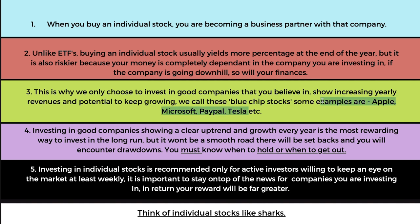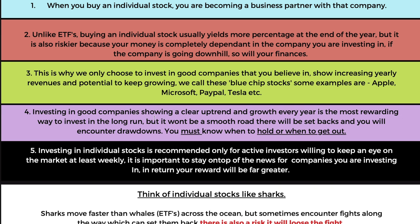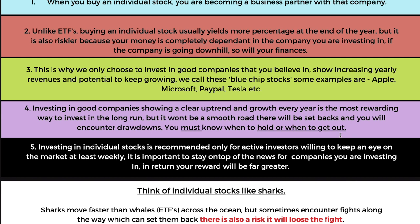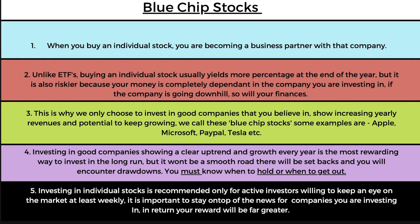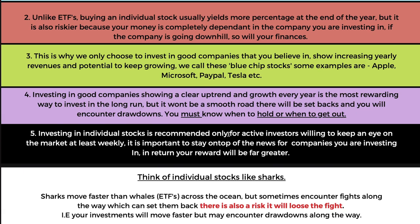Some examples of blue chip stocks are Apple, Microsoft, PayPal, Tesla — famous names that show growing revenues every year. The company itself is growing, which is a good sign the stock will follow. Investing in good companies showing a clear uptrend is the most rewarding way to invest long-term, but it won't be a smooth road — there will be setbacks and drawdowns. You must know when to hold or when to get out. For blue chip stocks, you have to be more on top of things — investing in individual stocks is recommended only for active investors willing to check the market at least weekly.